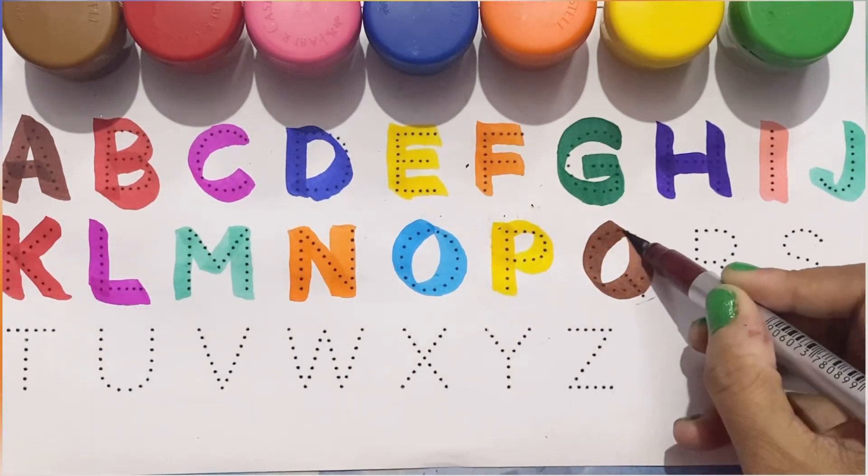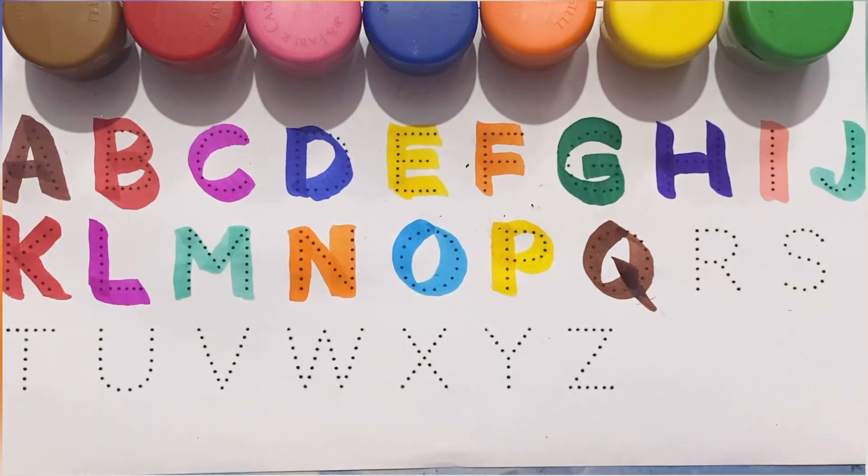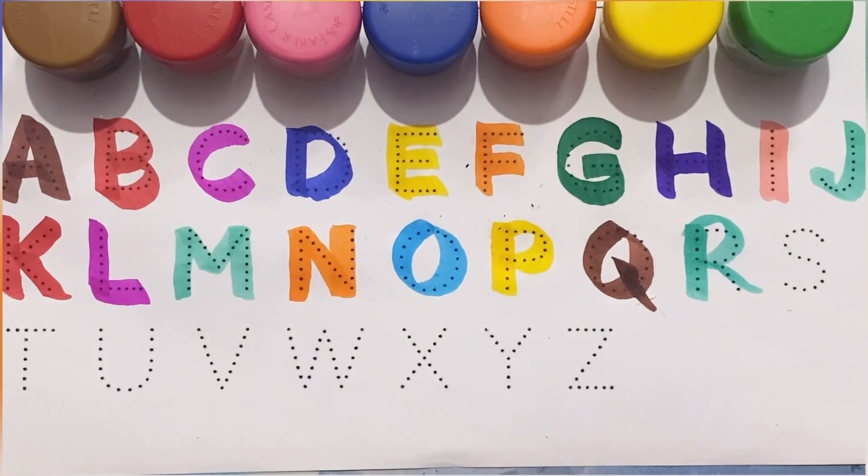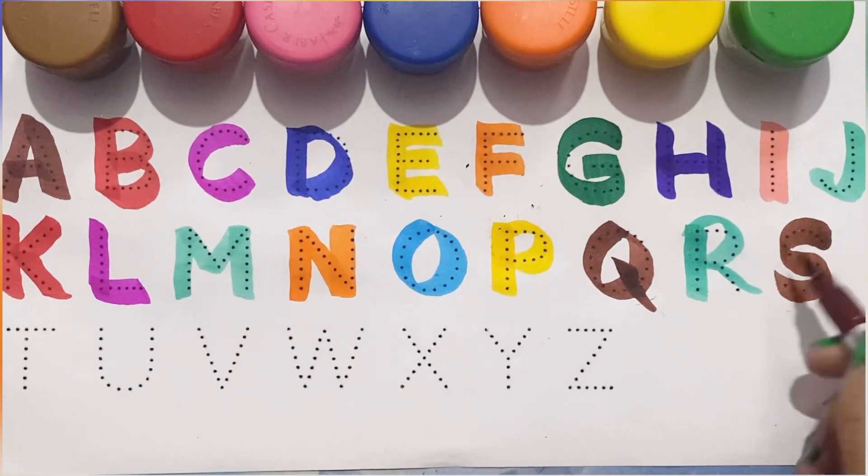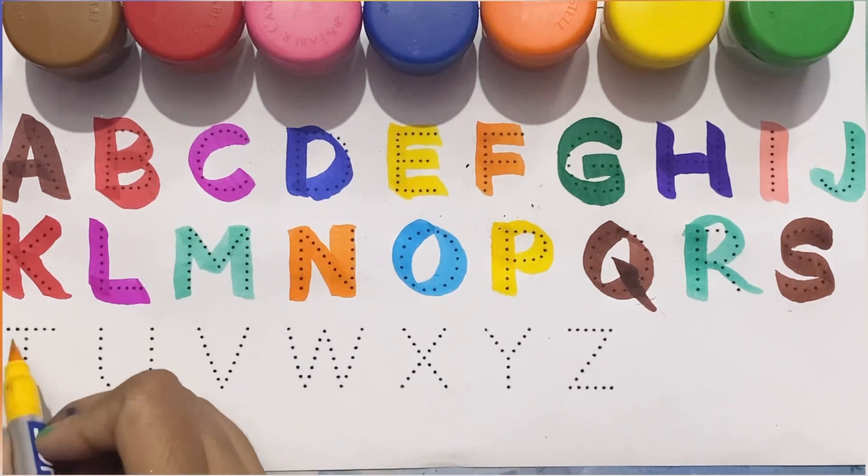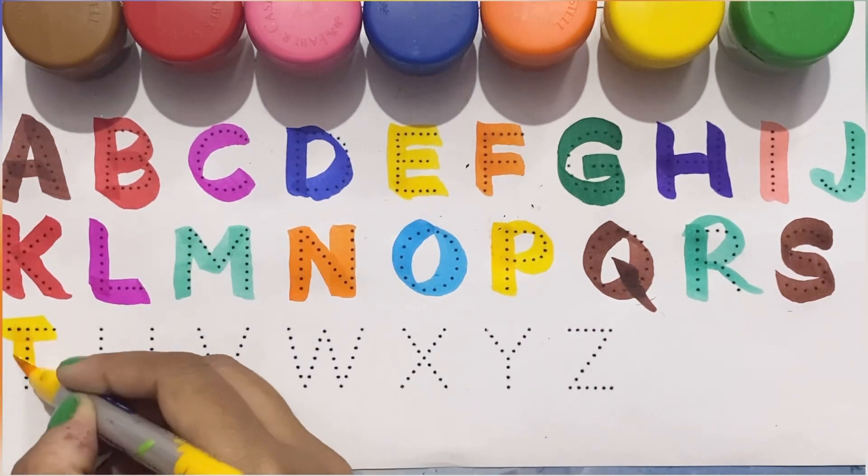Brown color, Q for queen. Green color, R for rose. Brown color, S for ship. Yellow color, T for tiger.